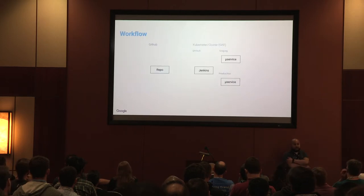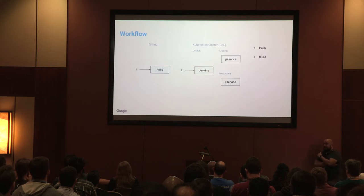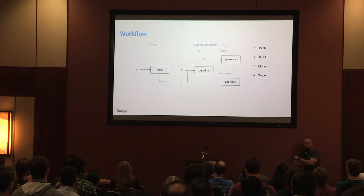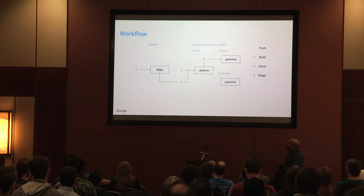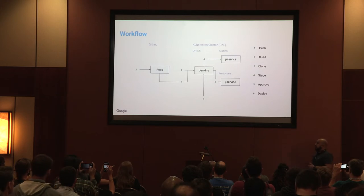The full workflow: push code into the repo, Jenkins fires off the build, clones the repo, does the build, stages it into the staging namespace. We've got three namespaces: default, staging, and production. Once staging looks good and human input approves it, it deploys into production. That's the workflow that fits with Jenkins.